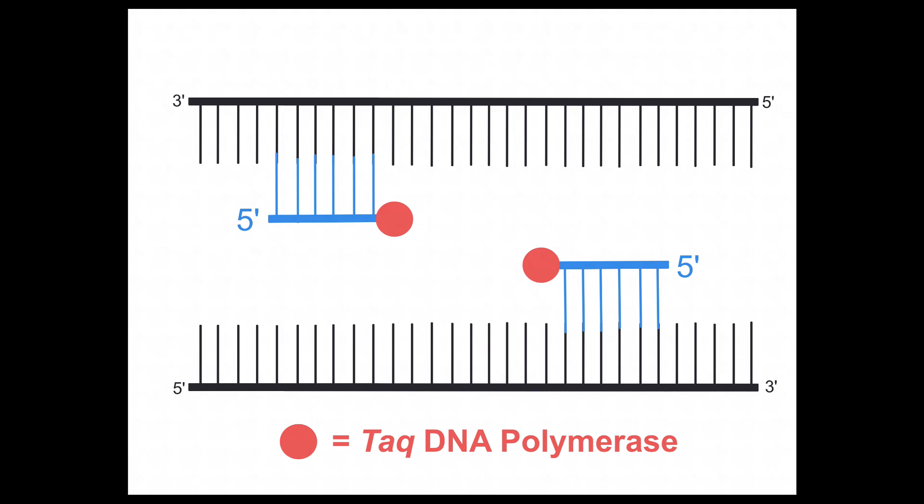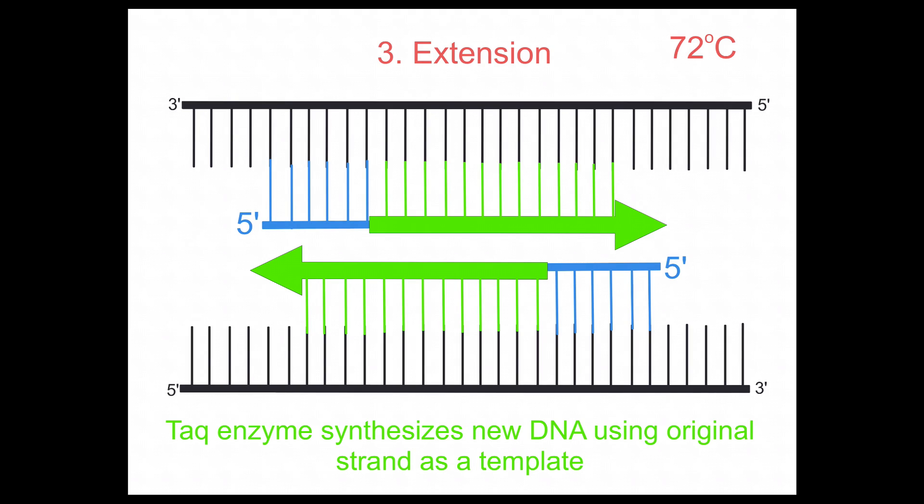We're going to see that happen in the next phase, which is known as the extension phase. In this last phase of PCR, which occurs at 72 degrees Celsius, which is the optimum temperature for Taq DNA polymerase to work, Taq DNA polymerase extends the primer from the three prime end in that five prime to three prime direction, generating a new strand of DNA, a new piece of DNA.